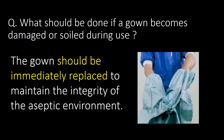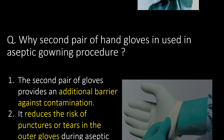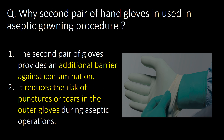What should be done if a gown becomes damaged or soiled during use? The gown should be immediately replaced to maintain the integrity of the aseptic environment. Why is a second pair of hand gloves used in the aseptic gowning procedure? The second pair of gloves provides an additional barrier against contamination and reduces the risk of punctures or tears in the outer gloves during aseptic operations.